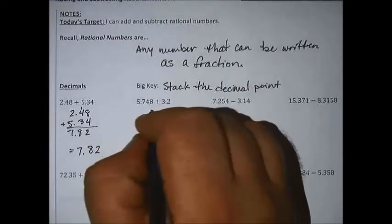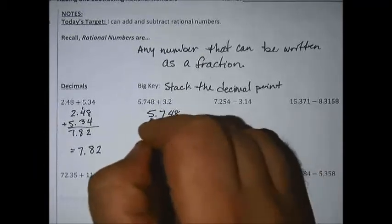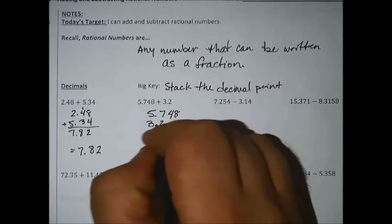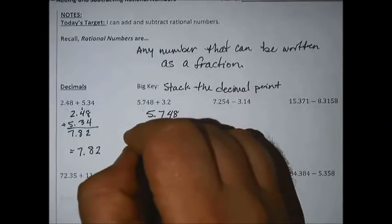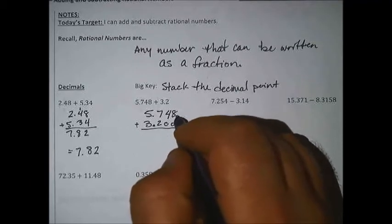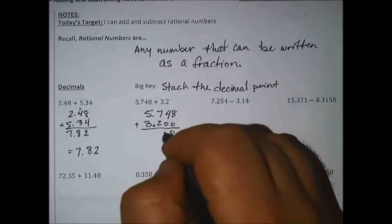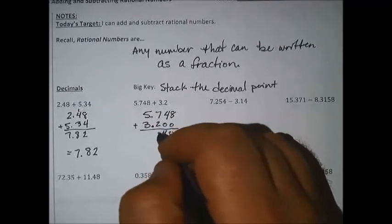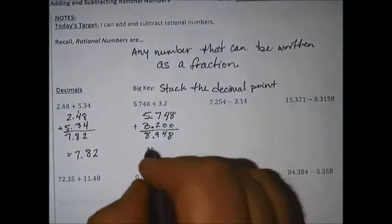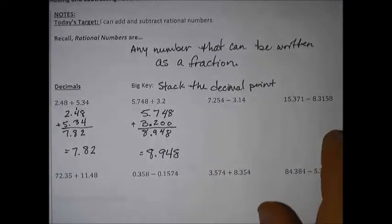The next one is a really important example for stacking the decimal point: 5.748 and 3.2. Write it so that the decimal point is over the other decimal point — they're lined up. You can fill in the zeros if you want; it doesn't really matter. 8 plus 0 is 8, 4 plus 0 is 4, 7 plus 2 is 9, and 5 plus 3 is 8, so we get 8.948 as our answer.